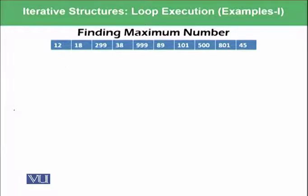Let's suppose we have this list which has 10 numbers starting from 12 until 45. Can you find the maximum number in this list quickly? Yes, we have found that the maximum number is 999. And what was the procedure? The procedure was your mind actually followed a specific process.